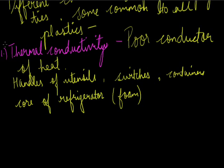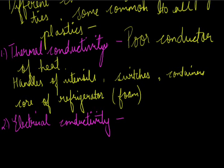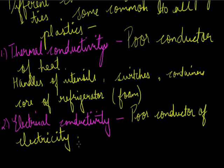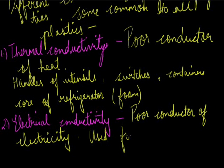The next important property of plastic is electrical conductivity — same as thermal conductivity. They are poor conductors of electricity, and so they are used for making wires. The coating of the wires is made of plastic due to this property of being unable to carry electric current. So these are two important properties — poor thermal conductivity and poor electrical conductivity.